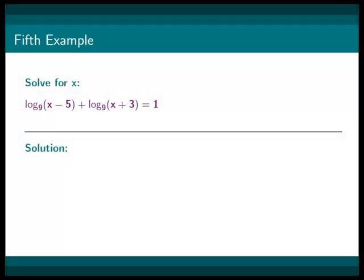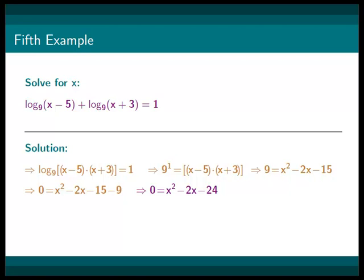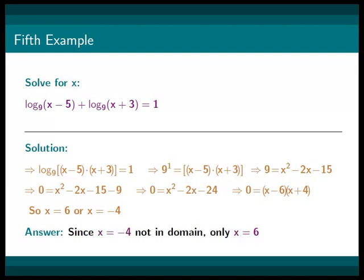In our last example, we are asked to solve for x from the equation log base 9 of (x minus 5) plus log base 9 of (x plus 3) equals 1. We start by combining to get log base 9 of (x minus 5)(x plus 3) equals 1. Converting to exponential form: 9 equals x squared minus 2x minus 15. Rearranging gives 0 equals x squared minus 2x minus 24. By factoring, we get 0 equals (x minus 6)(x plus 4), so x equals 6 or x equals negative 4. Since x equals negative 4 is not in the domain, our answer is x equals 6.